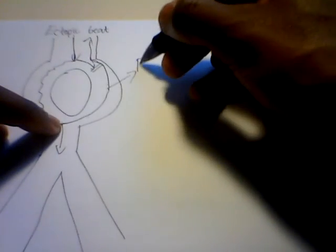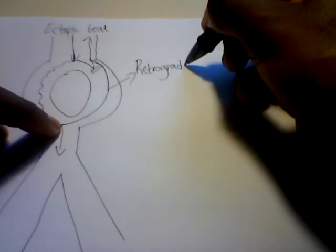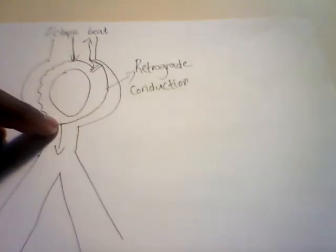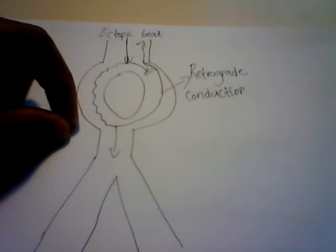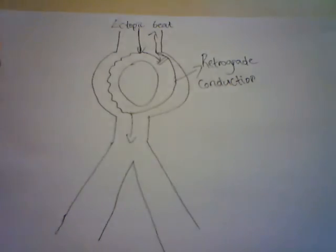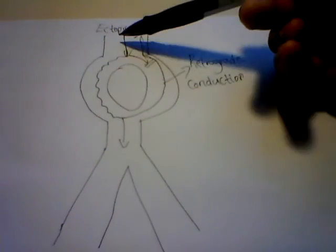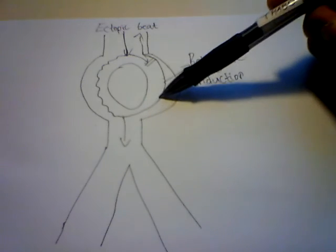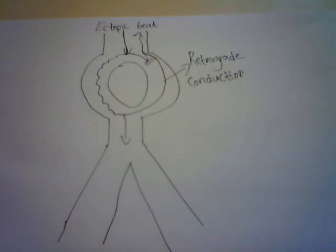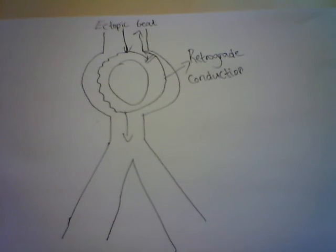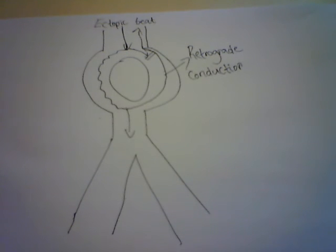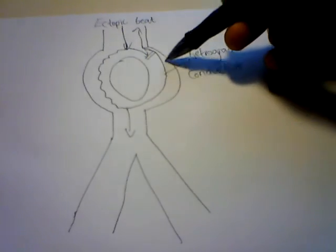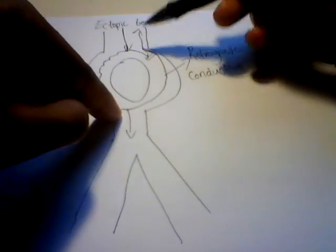The impulse now conducts up the fast pathway — this is called retrograde conduction, meaning it occurs in an anti-clockwise, retrograde direction. The antegrade direction was down the slow pathway; the retrograde direction is up the fast pathway. It goes up to the atria and activates them again. On your ECG you'll see negative P waves, which indicates retrograde conduction.